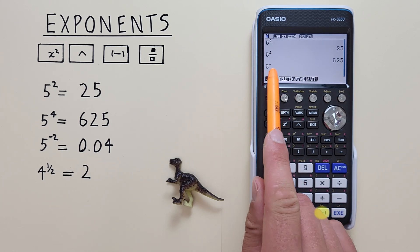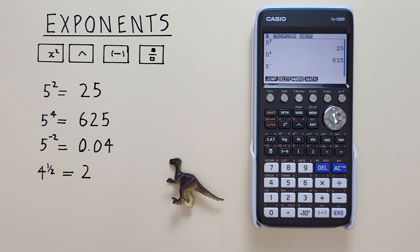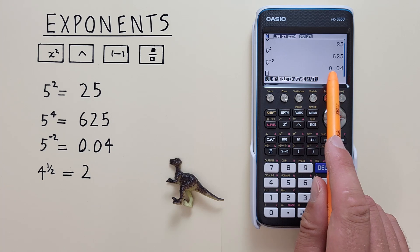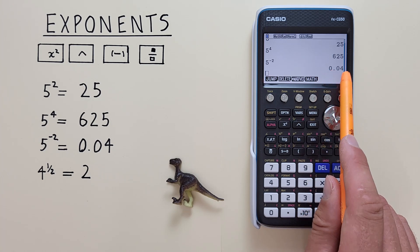So that we see the negative sign, and then the 2, and hit exe. And we see we get 5 to the power of negative 2 is equal to 0.04, which is correct.